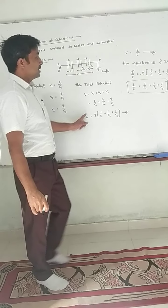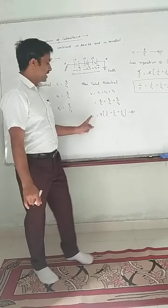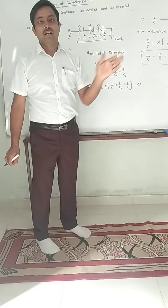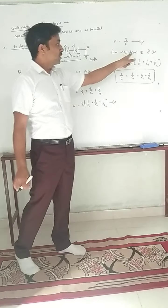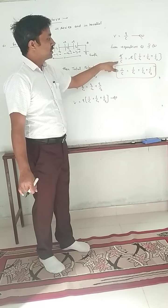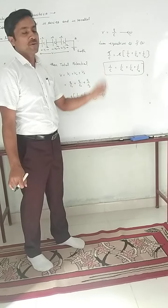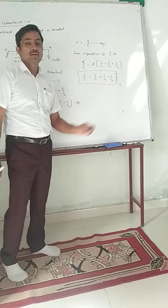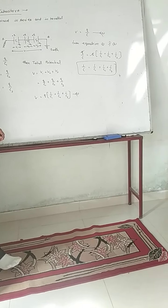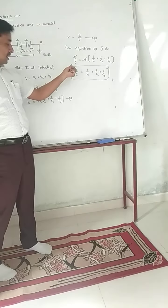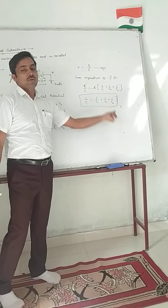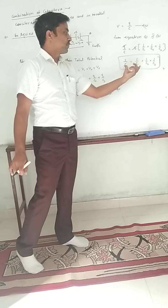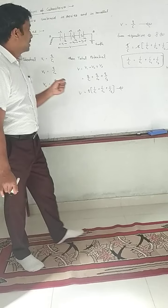From the first and second equations, the left-hand side equals the right-hand side. Therefore: 1 upon C equals 1 upon C1 plus 1 upon C2 plus 1 upon C3. The total equivalent capacitance in series — the total capacitance is inversely proportional to the sum.